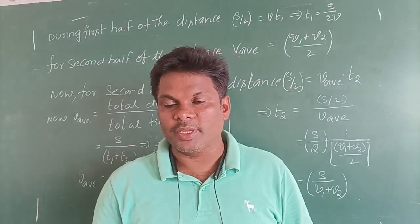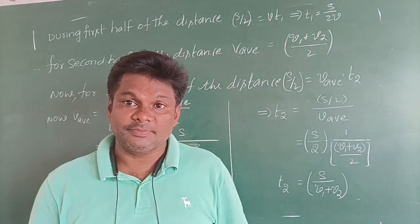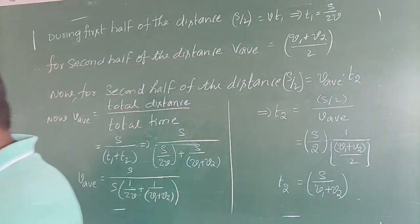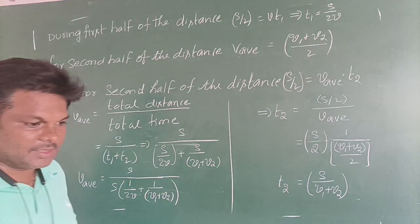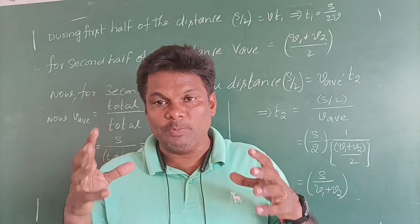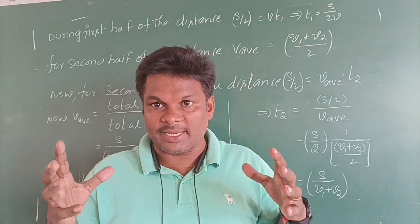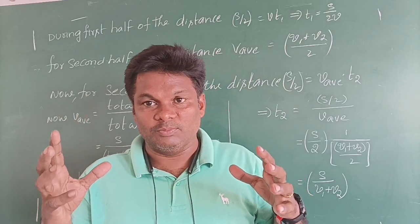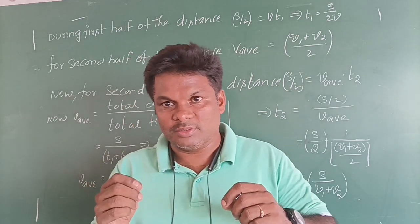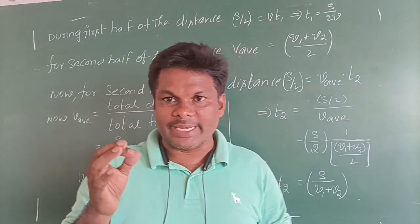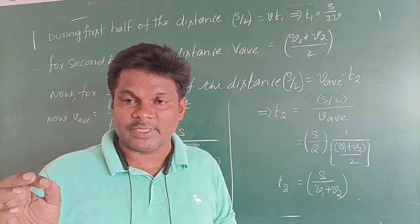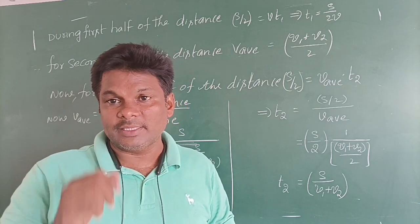Good afternoon. Today we are going to discuss one more sum in which we calculate average velocity. Why average velocity and not average speed or distance? Because when an object is moving in a straight line, it is moving with respect to time, and a straight line represents displacement. Along displacement we use velocity.